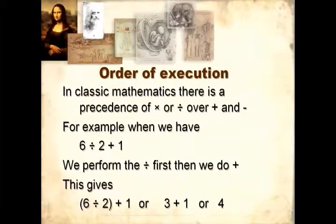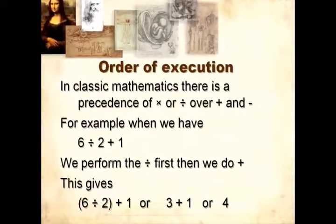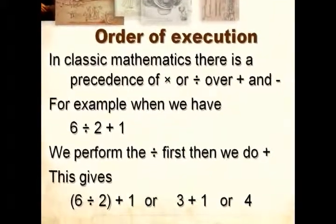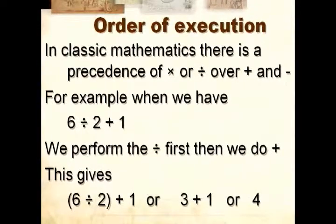In classic mathematics, there's a precedence of product or division over plus and minus. For example, when we have 6 divided by 2 plus 1, we perform the division first, and then we do plus. This gives us 6 divided by 2, which is 3, and plus 1, which finally is 4.